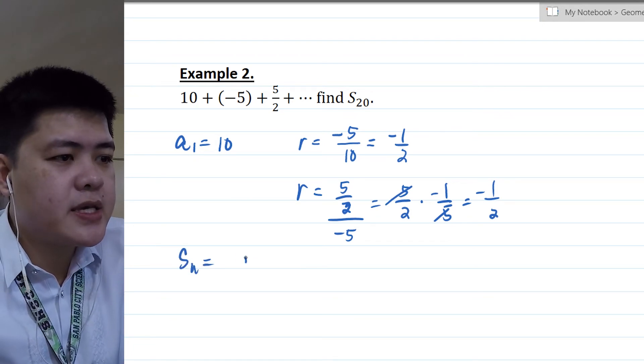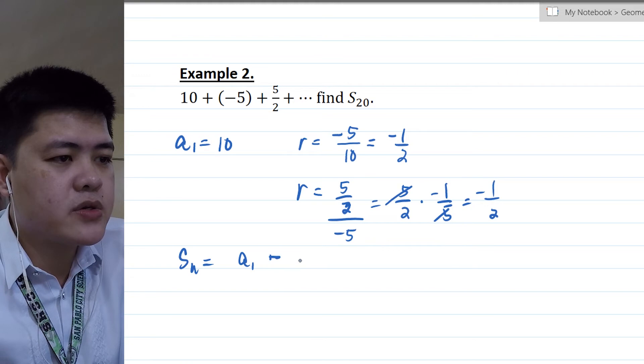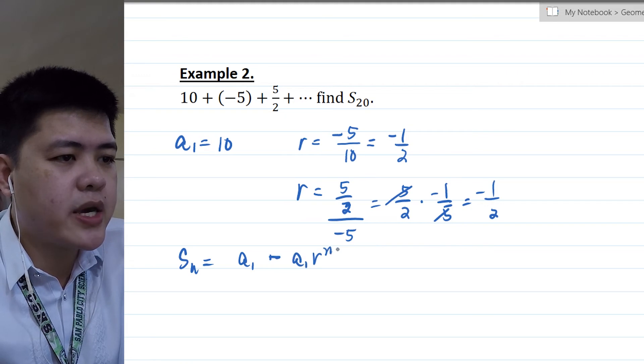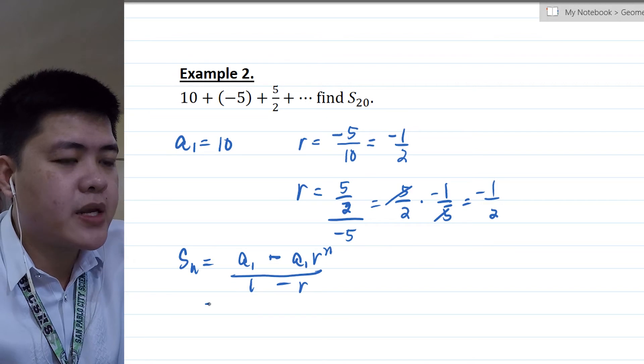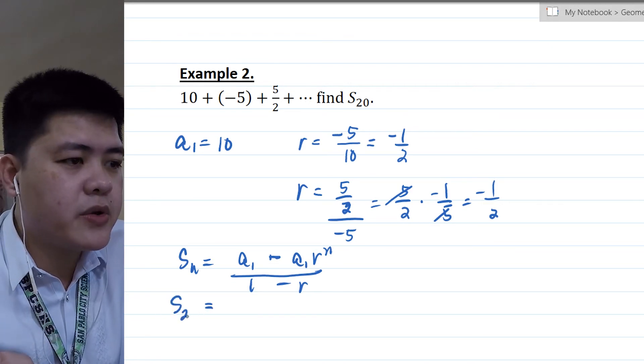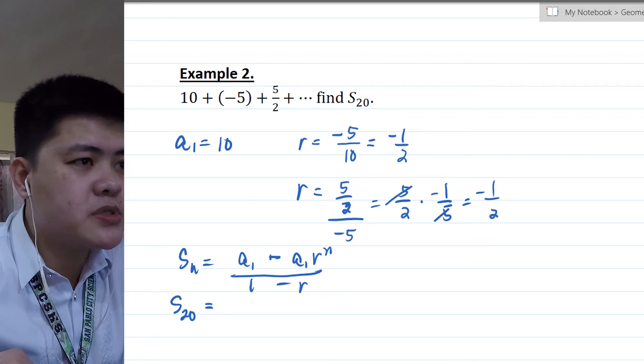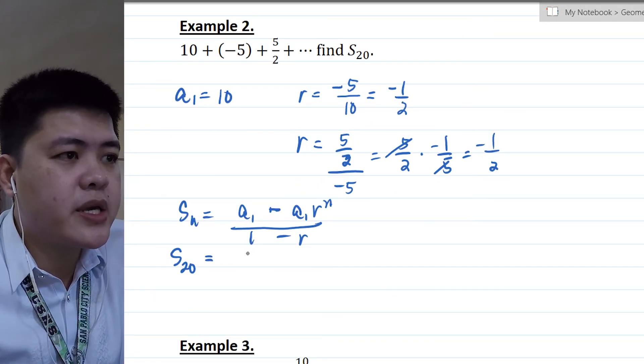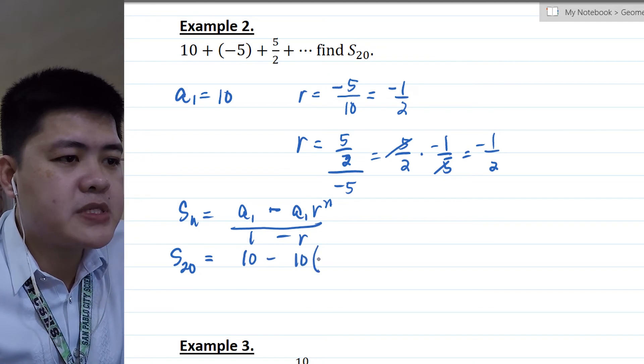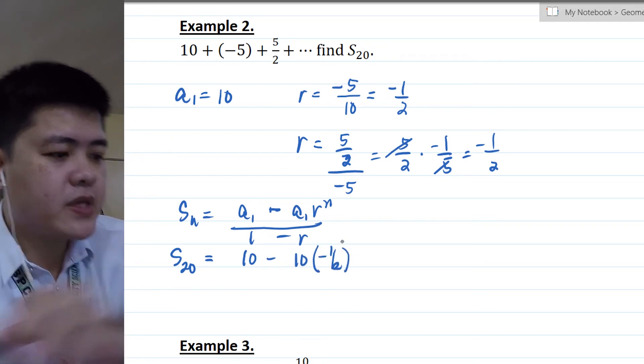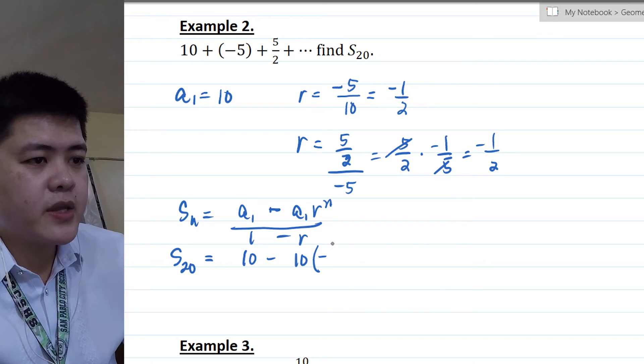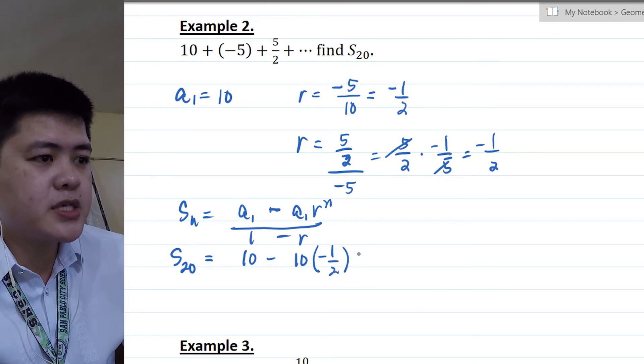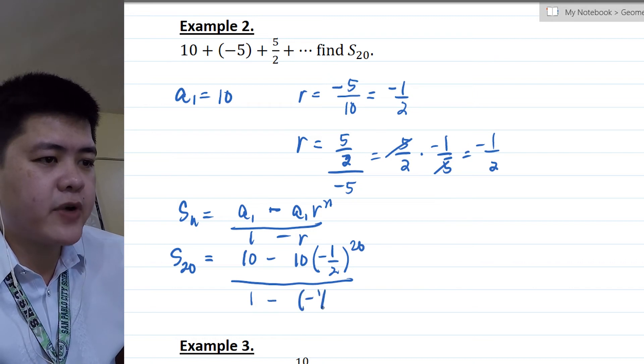The formula again is A sub 1 minus A sub 1 R raised to n over 1 minus R. Let's plug in all the details. We're looking for the sum of the first 20 terms. A sub 1 here is 10 minus 10 times negative 1 half. Sorry, let's use 1 half. 1 half raised to 20 divided by 1 minus negative 1 half.